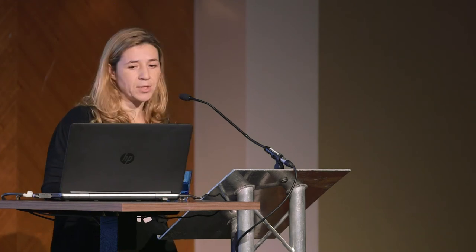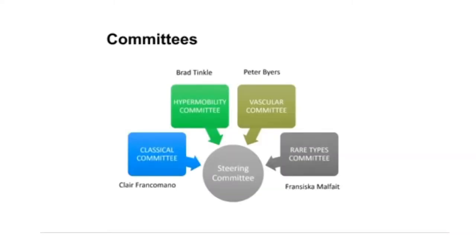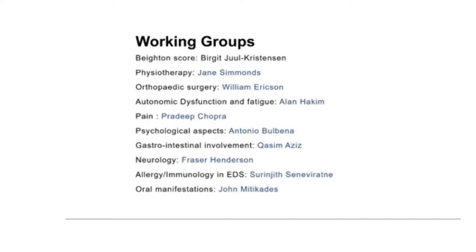EDS UK and the EDNF in the States put together an enormous amount of money and time to get everyone around the world together. Finally, we had the meeting in New York in 2016 — a very successful meeting — and as you know, there has since been the creation of a new international patient support group, the EDS Society. Five committees were formed: one for classical EDS, one for hypermobility, one for vascular and rarer types, and a steering committee. On top of that, ten different working groups were formed — the first time this had ever happened — to look not only at the criteria but at associated symptoms and management, covering physiotherapy, pain, gastroenterology, and POTS.